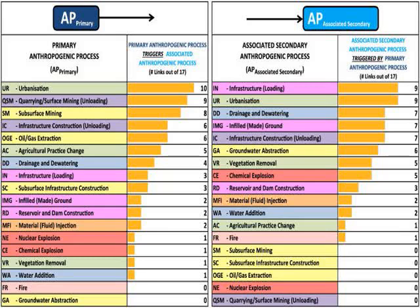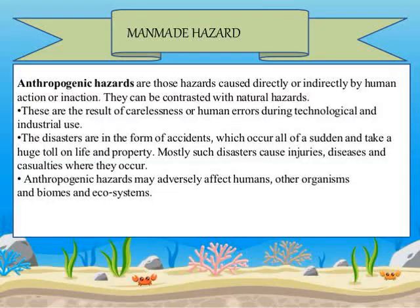Civil disorder is a broad term typically used by law enforcement to describe forms of disturbance when many people are involved and are set upon a common aim. Civil disorder has many causes including large-scale criminal conspiracy, socioeconomic factors, hostility between racial and ethnic groups, and outrage over perceived moral and legal transgressions.